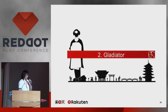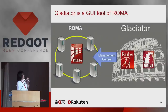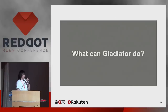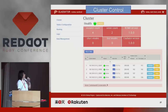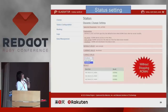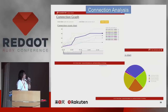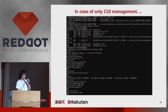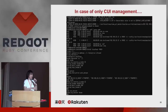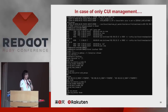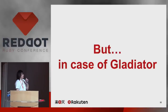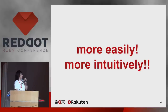The next topic is Gradiator. Gradiator is a GUI tool for ROMA. What can Gradiator do? Gradiator can do everything — cluster control, status setting, log gathering, and connection analysis like connection count and connection resource rate. Without it, you have to log into the server, check the process, connect to ROMA via telnet, and check the status manually. But with Gradiator, you can use ROMA more easily and more intuitively.